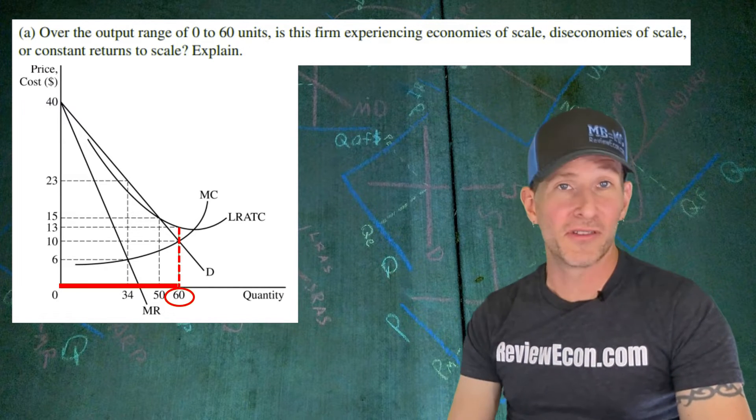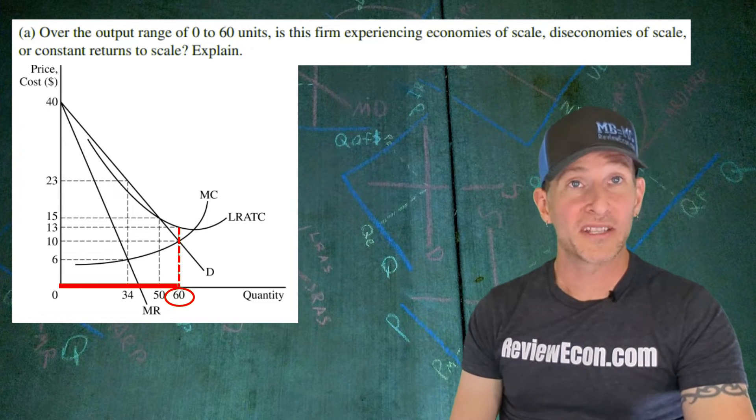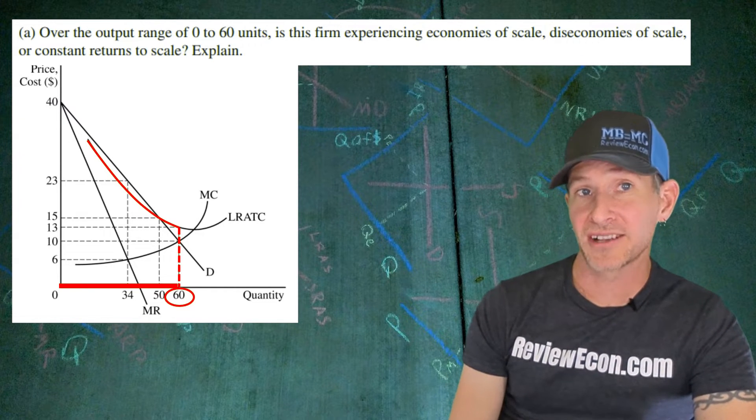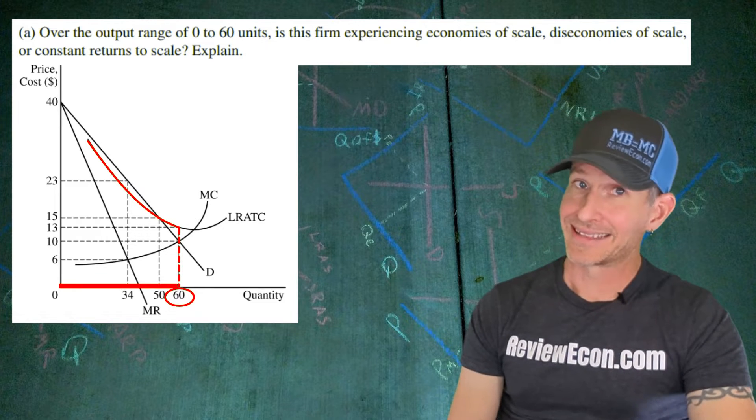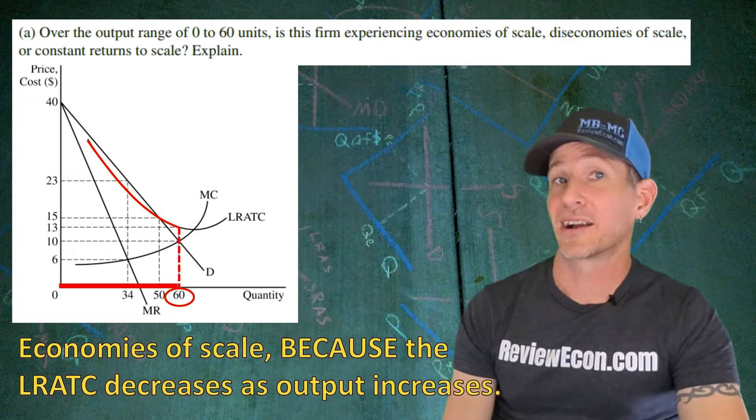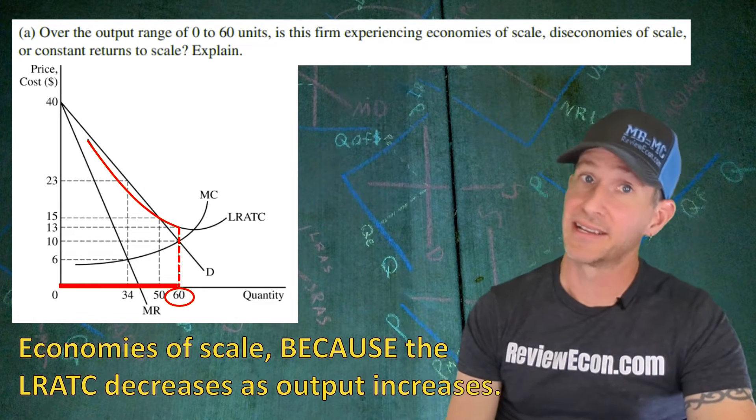So we're looking at all of the units up to 60. Questions about economies of scale always focus on the long run average total cost curve. As you can see, the long run average total cost curve is constantly downward sloping through 60 units. Since it's constantly downward sloping through those units, they are experiencing economies of scale, because the long run average total cost curve is decreasing as output increases.